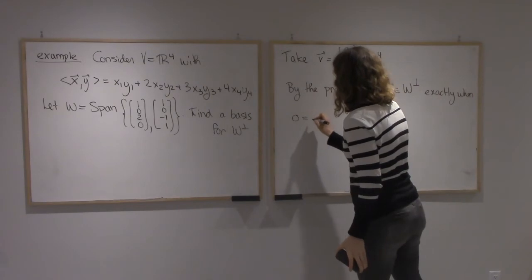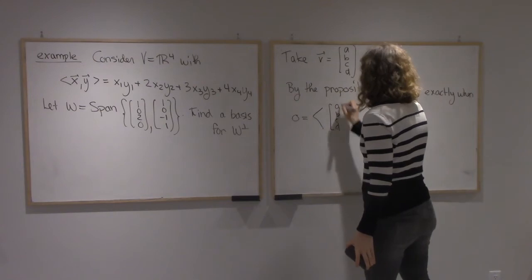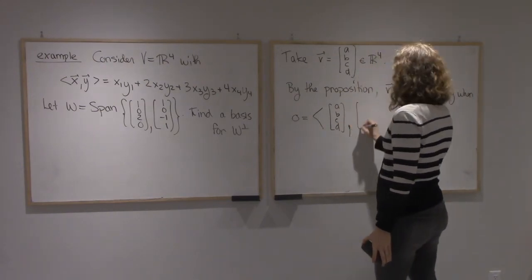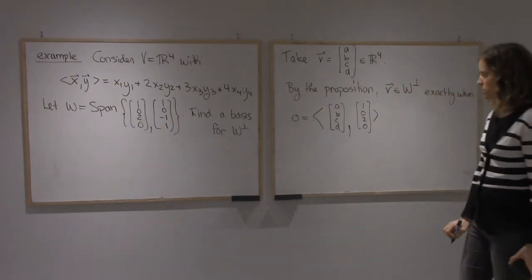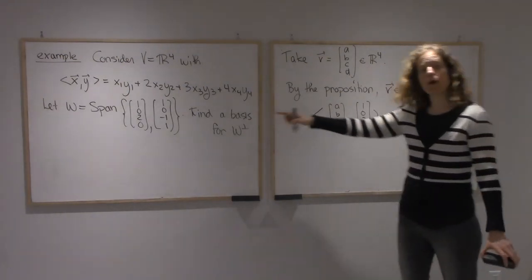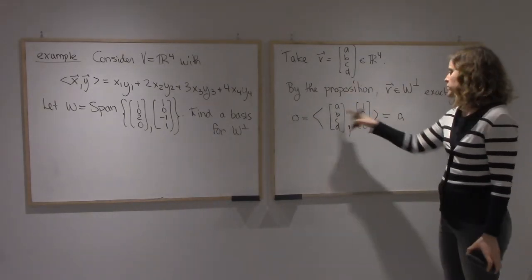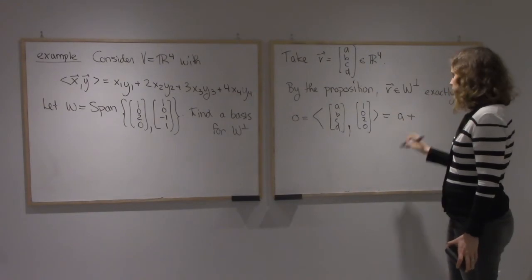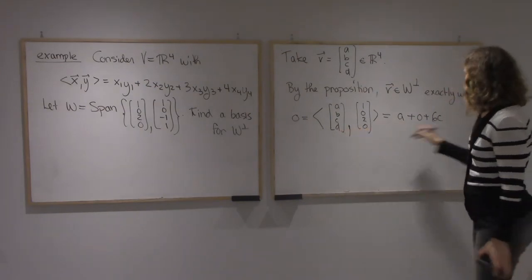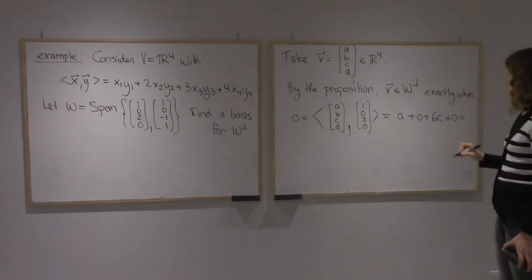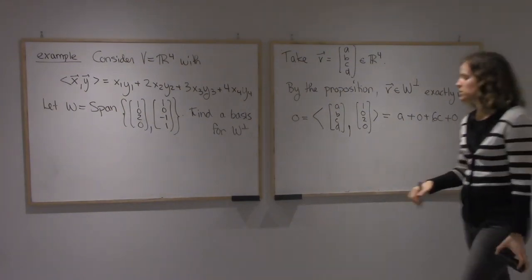So 0 equals the inner product of (A, B, C, D) with (1, 0, 2, 0). This gives us: A times 1, plus B times 2 — that's 0 — plus C times 3 — that's 6C — plus D times 4 — that's 0. So the first condition is A + 6C = 0.